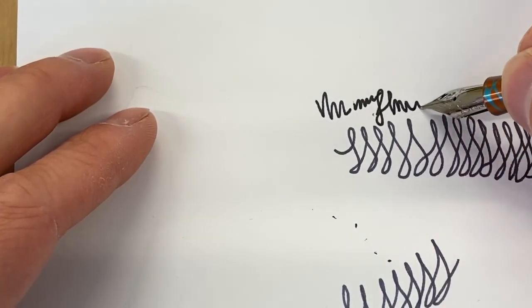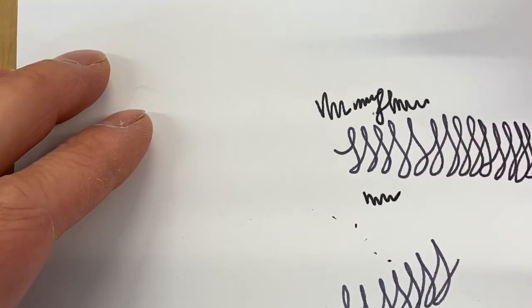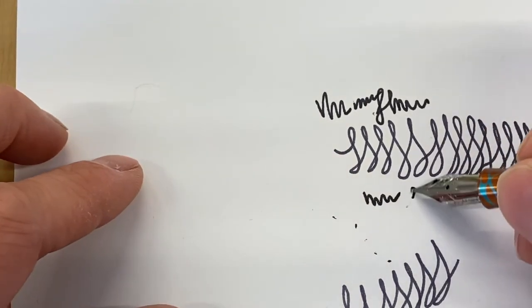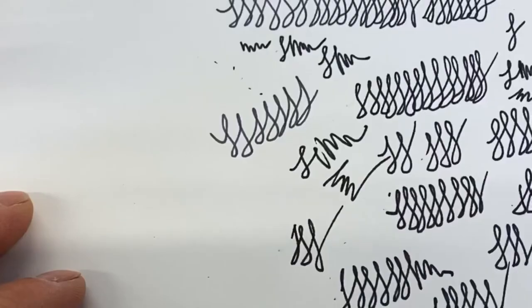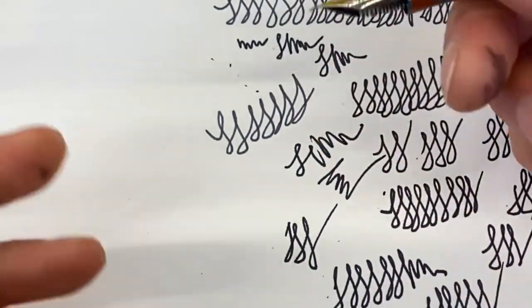So now we've got—all right, so there you have it. We got the ink to flow through to the front of the pen. We have ink in the slit here.